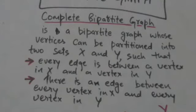A complete bipartite graph is a bipartite graph whose vertices can be partitioned into two sets X and Y such that every edge is between a vertex in X and a vertex in Y, and there is an edge between every vertex in X and every vertex in Y.